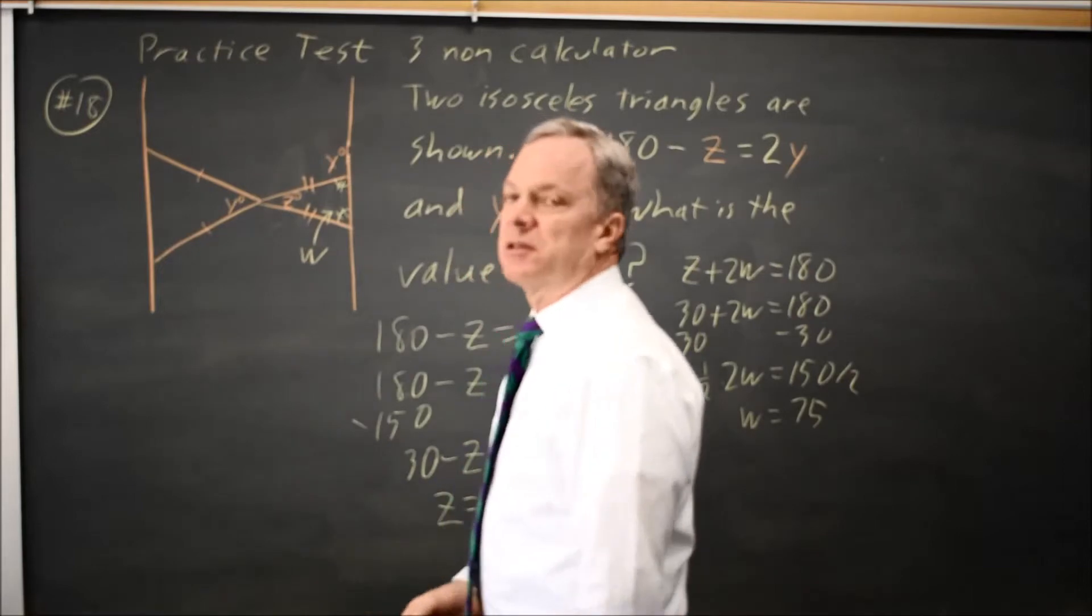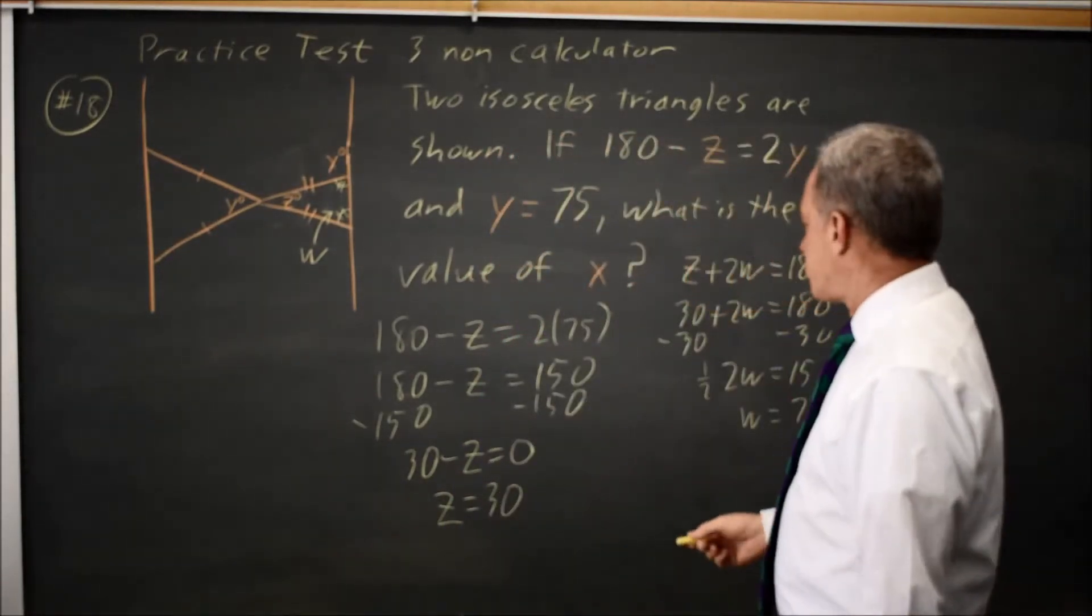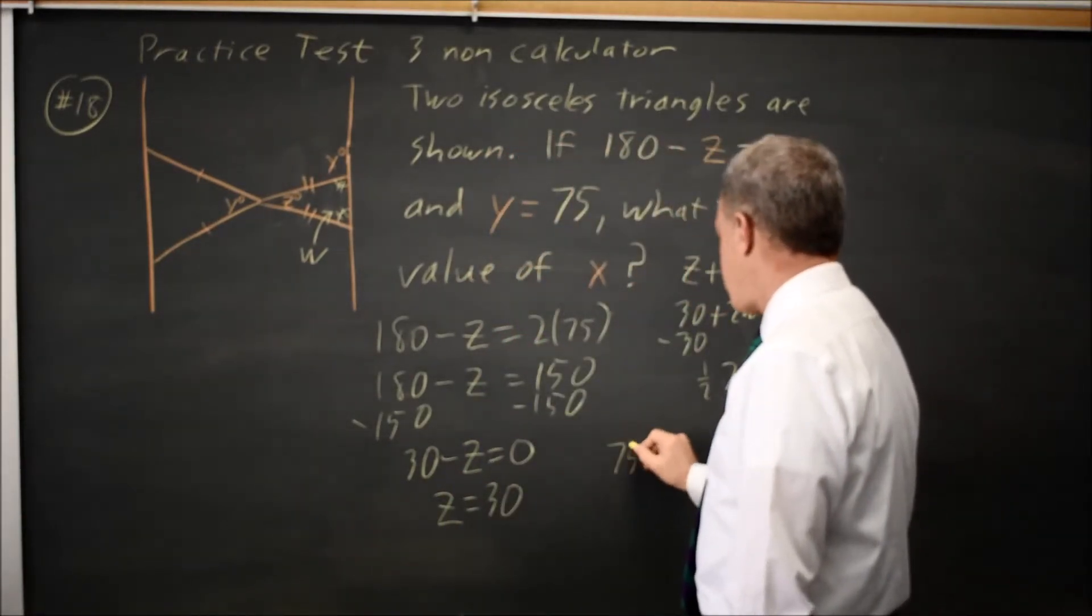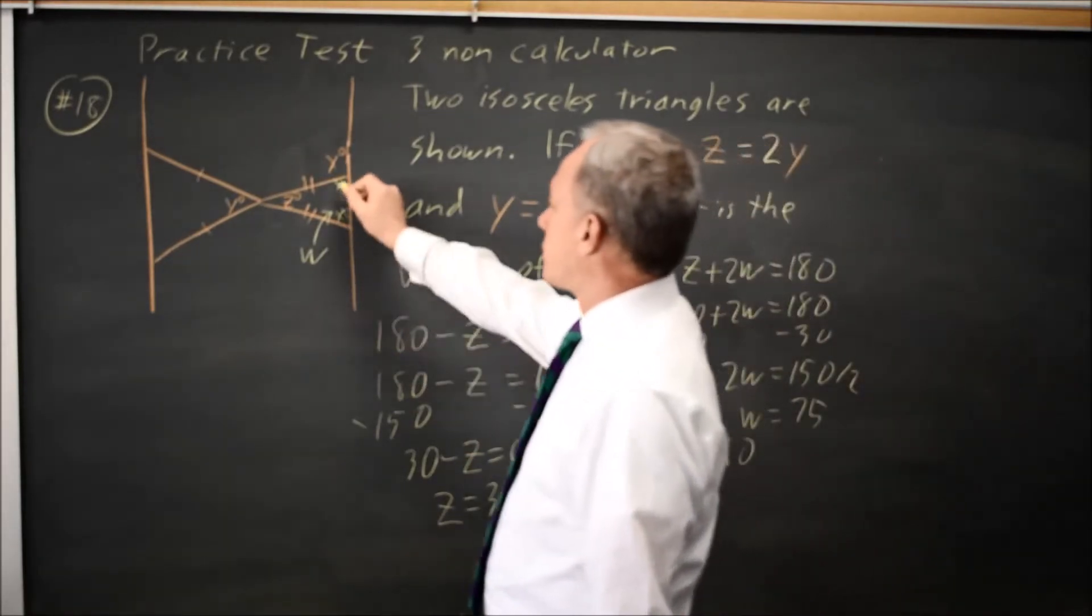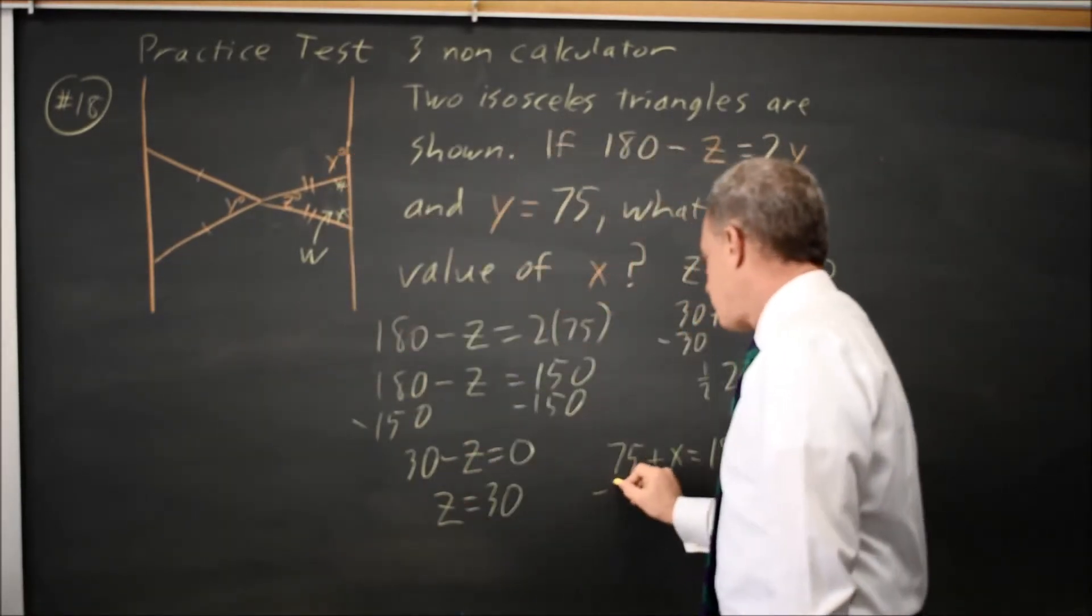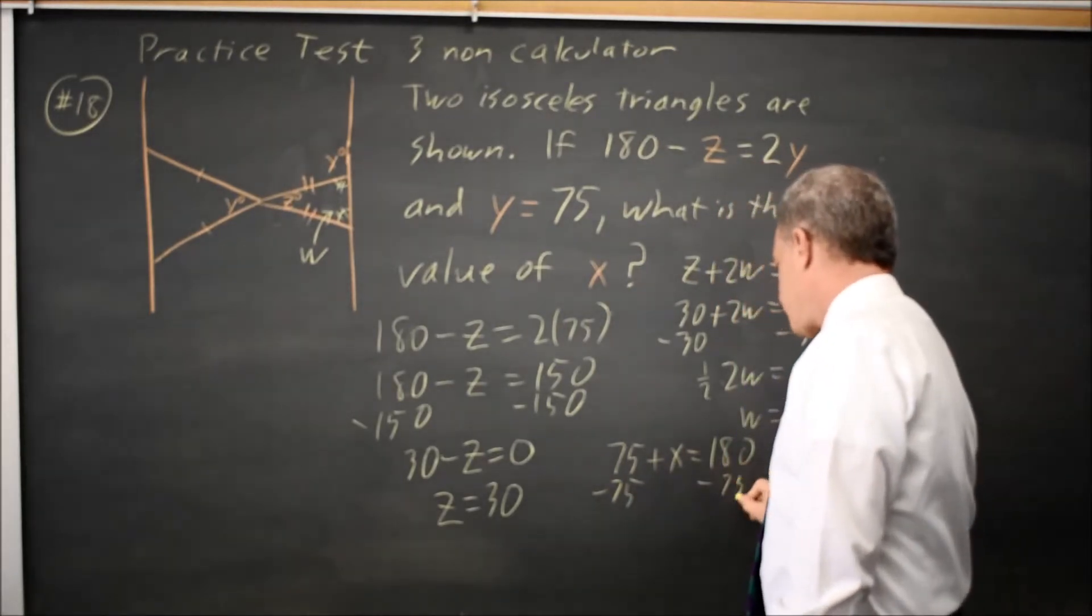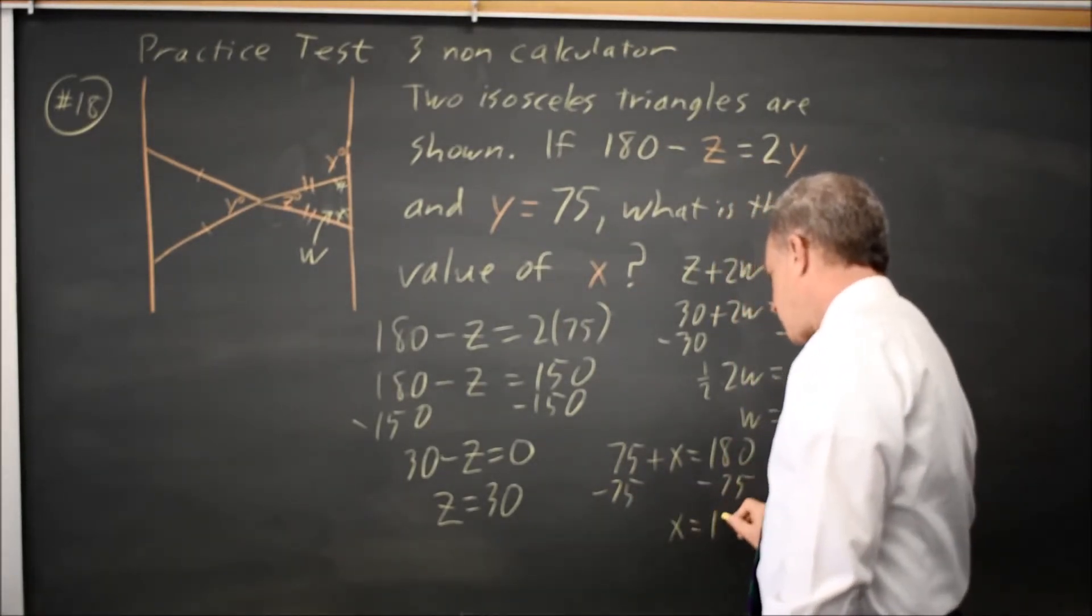w plus x makes up a straight angle. They're supplementary, so 75 plus x equals 180, because supplementary angles add up to 180. Subtract 75 and x equals 105.